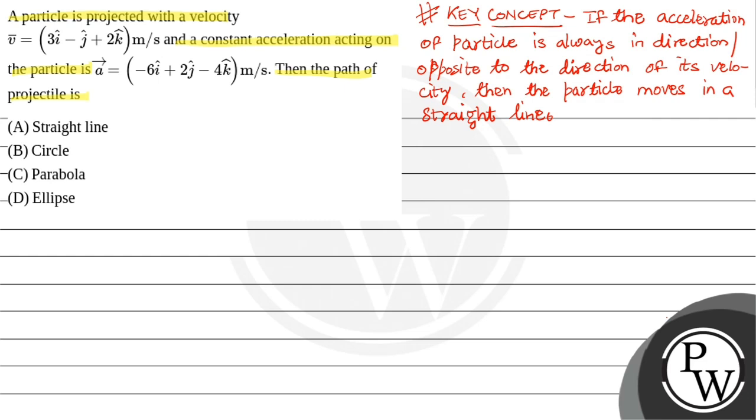So now let us solve this question. In the question the velocity is 3i cap minus j cap plus 2k cap. And the acceleration is minus 6i cap plus 2j cap minus 4k cap.